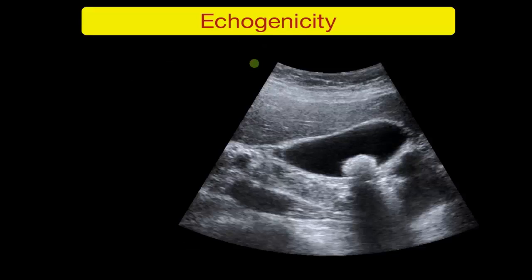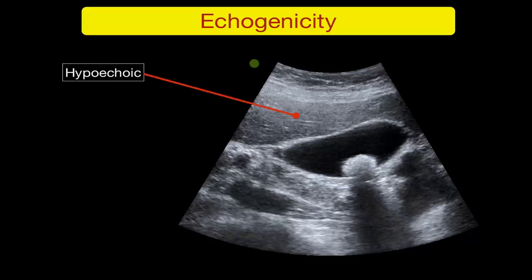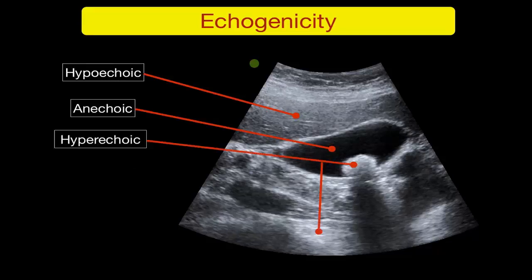Again with the gallbladder image: the liver is hypoechoic, the fluid in the gallbladder is anechoic, the gallbladder stone and the air in the bowel are hyperechoic.